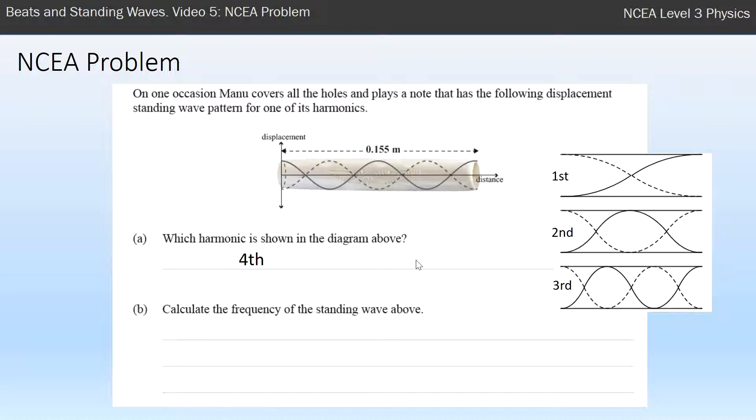Now calculate the frequency of the standing wave. Whenever I do these, I always write down how many full wavelengths there are. In this case, there's two full wavelengths in this length of 0.155 meters. I can work out the actual wavelength—it's going to be half that. Then I use my wave equation, velocity equals frequency times lambda, and rearrange to find frequency. That's 340 divided by that number, and we get 4,390 Hz to three significant figures.